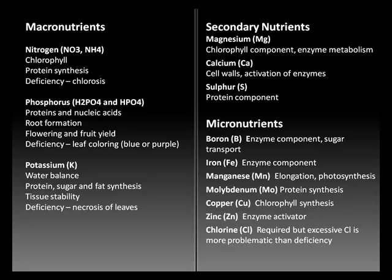Potassium is important for water balance — the maintenance of turgor in leaves — and prevents wilting. Potassium exchange allows leaf stomates to open and close. It is also found in protein, sugar, and fat synthesis in plants, helping to stabilize tissues. Too little potassium results in necrosis, or death, of plant leaves.